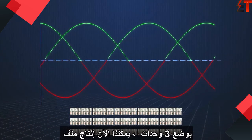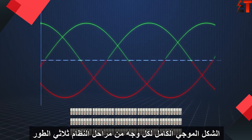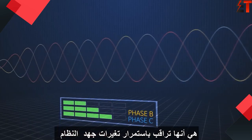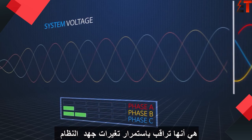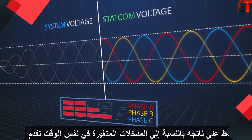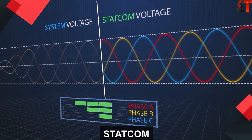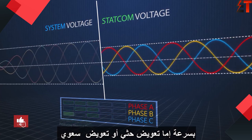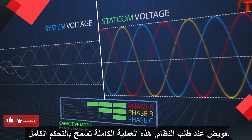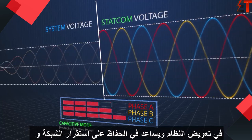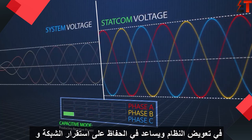Stacking the modules three high, we can now produce a complete waveform for each phase of the three-phase system. The sophistication of the STATCOM is that it continually monitors the always-changing system voltage to maintain its output relative to the changing input. Simultaneously, the STATCOM rapidly provides either inductive or capacitive compensation when required, allowing total control over system compensation and helping to maintain grid stability and boost efficiency.